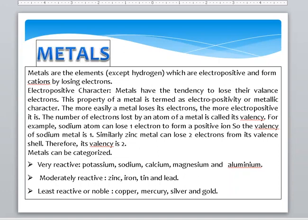Metals have the tendency to lose their valence electrons. This property of metal is termed as electropositive or metallic character. The more easily a metal loses its electrons, the more electropositive it is. The number of electrons lost by an atom of a metal is called its valency. For example, sodium atom can lose one electron to form a positive ion or cation, so the valency of sodium metal is one. Similarly, zinc metal can lose two electrons from its valence shell, therefore its valence is two.